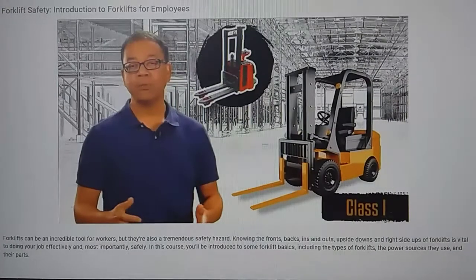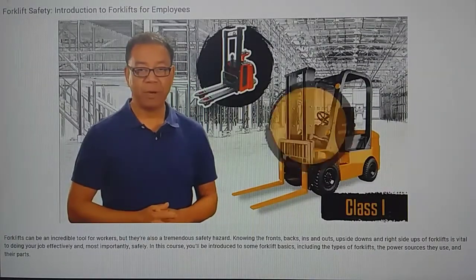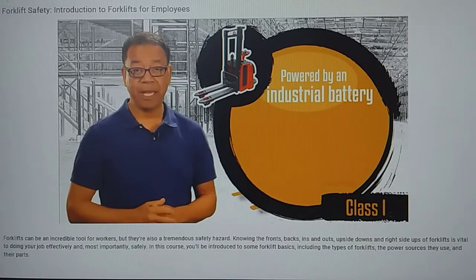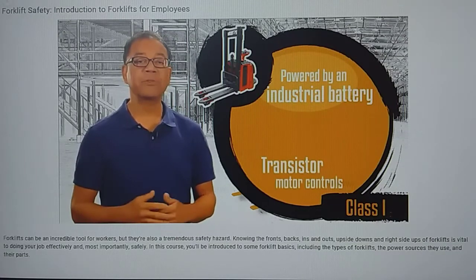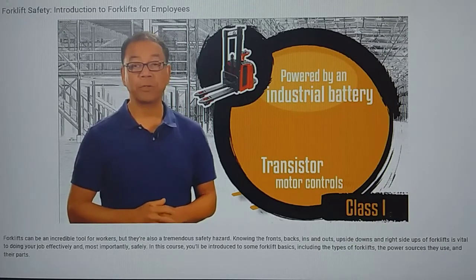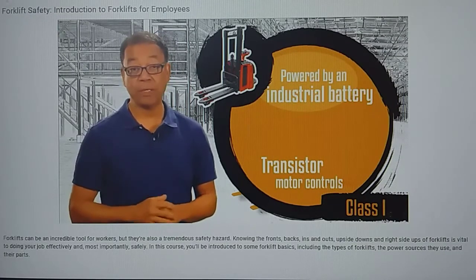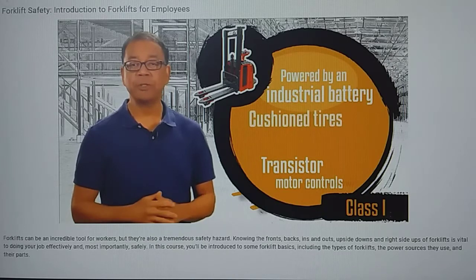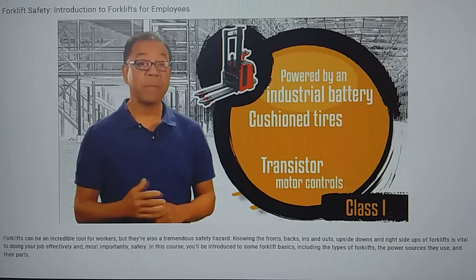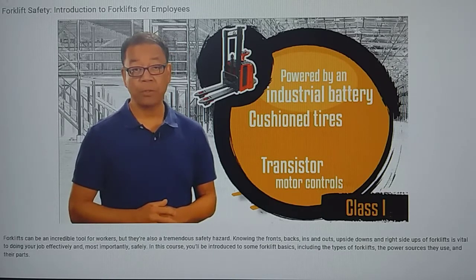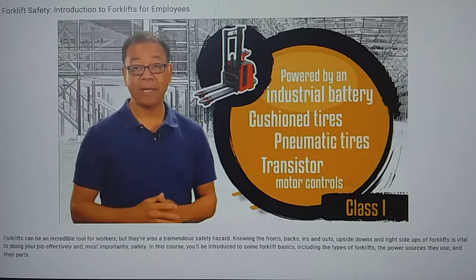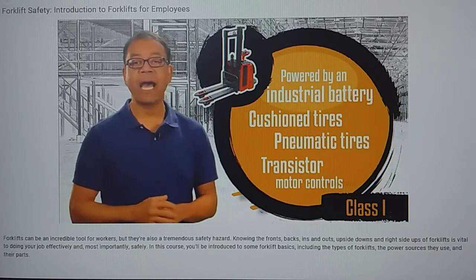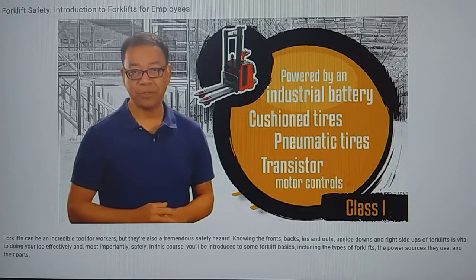Class 1, electric motor rider trucks are powered by industrial batteries and use transistor motor controls for travel and hoist functions. They can have cushioned tires, which can be used indoors on smooth floors, or pneumatic tires, which can be used in dry outdoor applications.